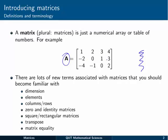There are a lot of new terms associated with matrices that we'll become familiar with and that we need to know about. One of them is the dimension of a matrix, or the size of a matrix, and we talk about the number of rows by the number of columns, so A here is a 3 by 4 matrix in terms of dimension.